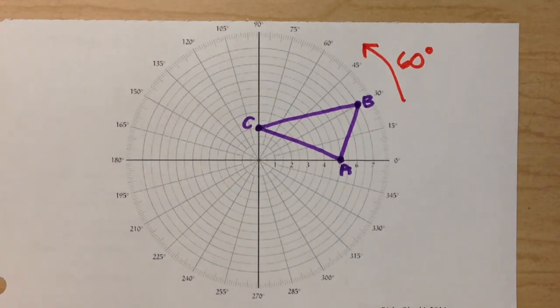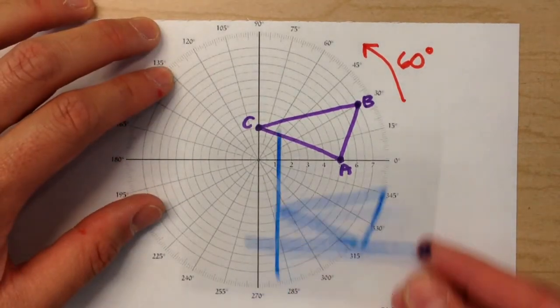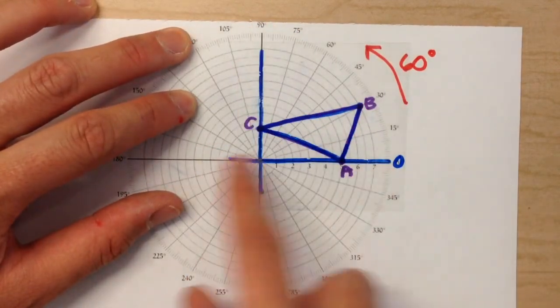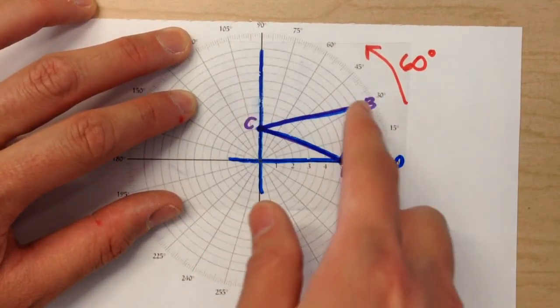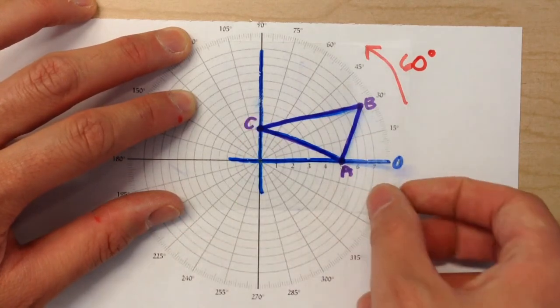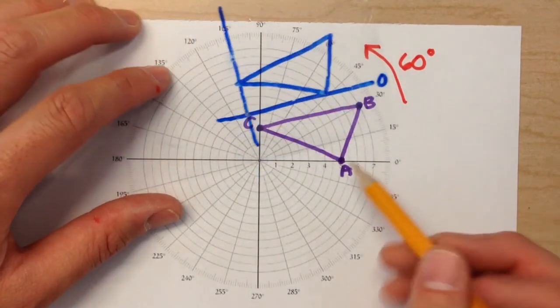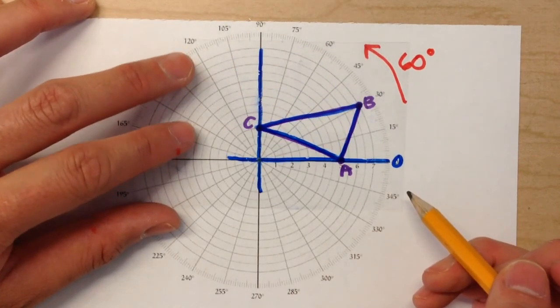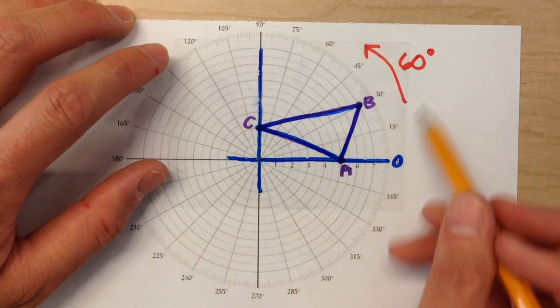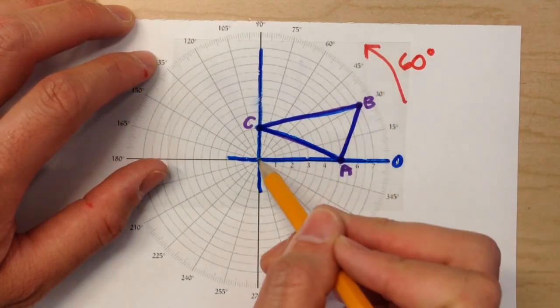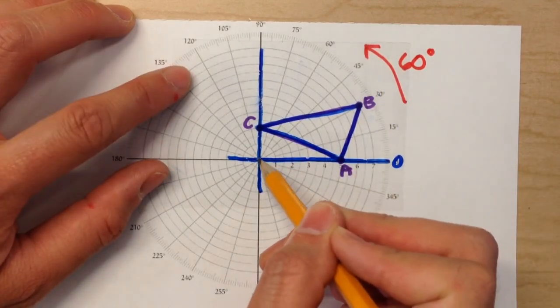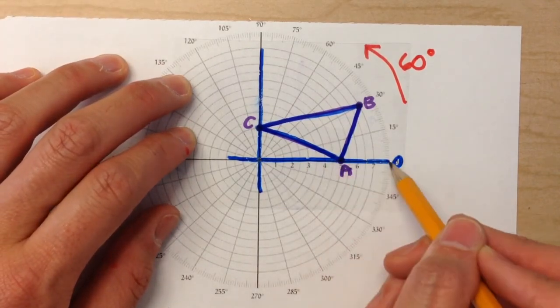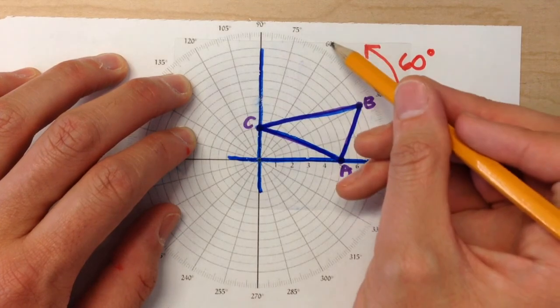I made myself a little transparency. On the transparency, I have the axes and I drew the triangle in it. You'll notice that this x-axis is 0 degrees. If I want to rotate this triangle 60 degrees counterclockwise about the origin, the center of the graph, what I want to do is rotate it so that this 0 degree line ends up at 60 degrees.